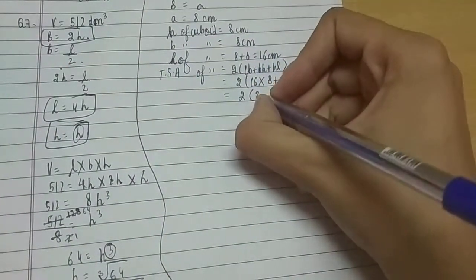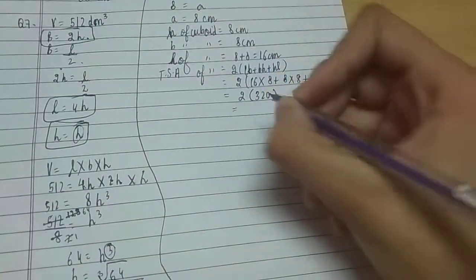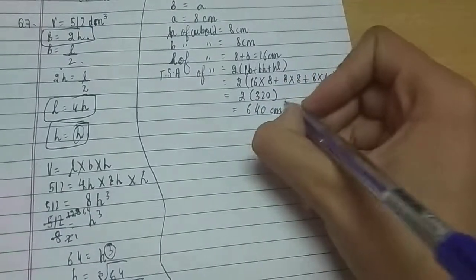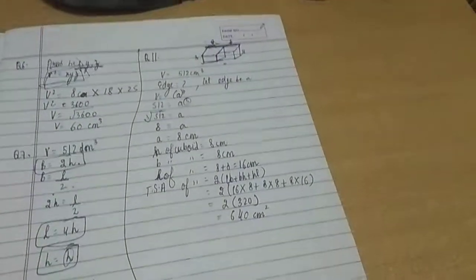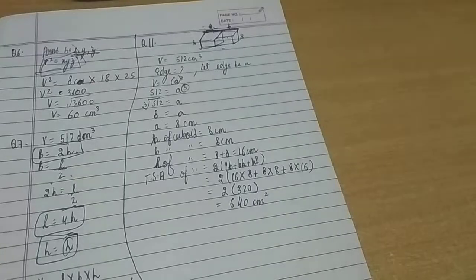So when we do this, this is 320 and 320 × 2 is 640 cm², right? So total surface area of the resulting cuboid is 640 cm². Thank you for watching this video.